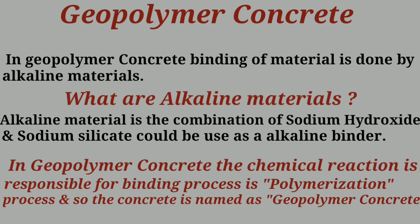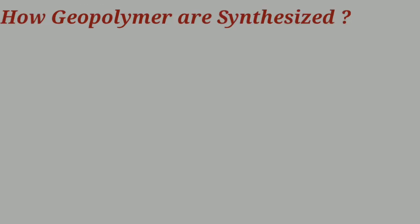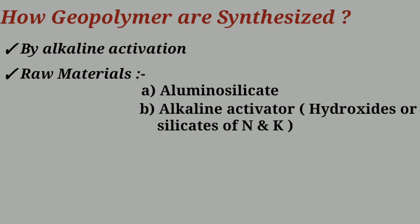How are geopolymers synthesized? First, by alkaline activation, and second, through raw materials — alumino silicate and an alkaline activator. The alkaline activators are hydroxides and silicates.